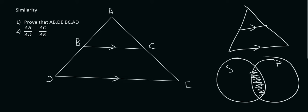This question says prove that AB times DE - there's meant to be an equal sign there - is equal to BC times AD.